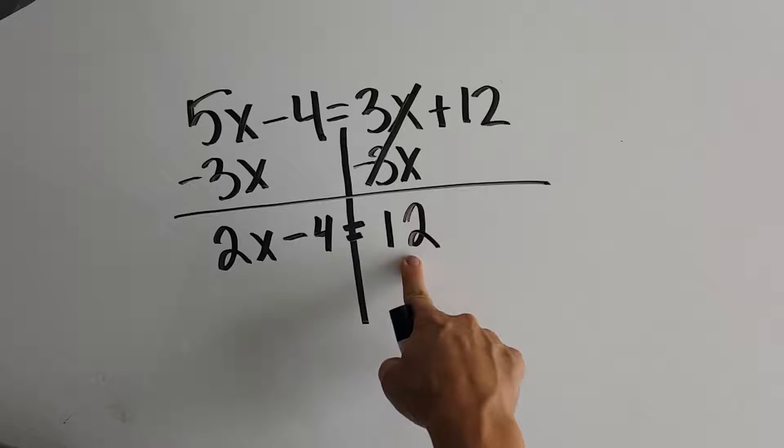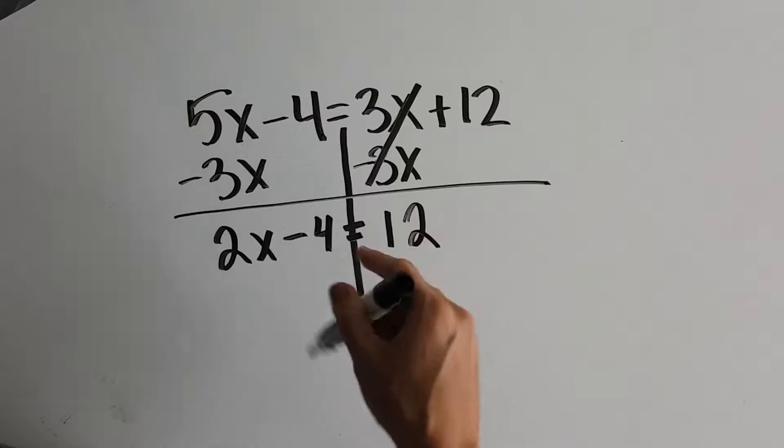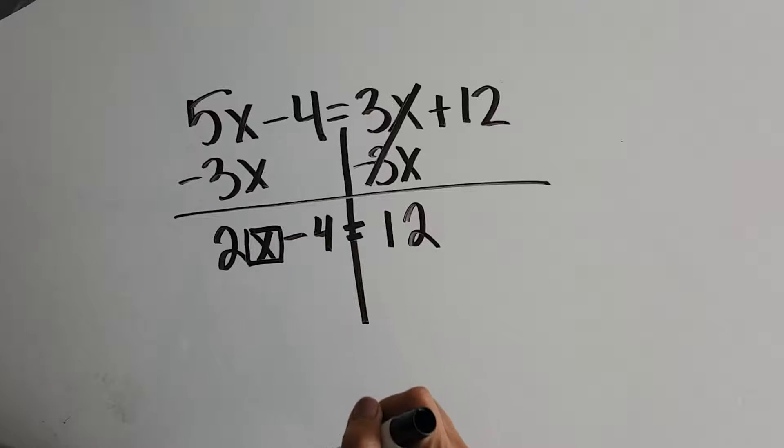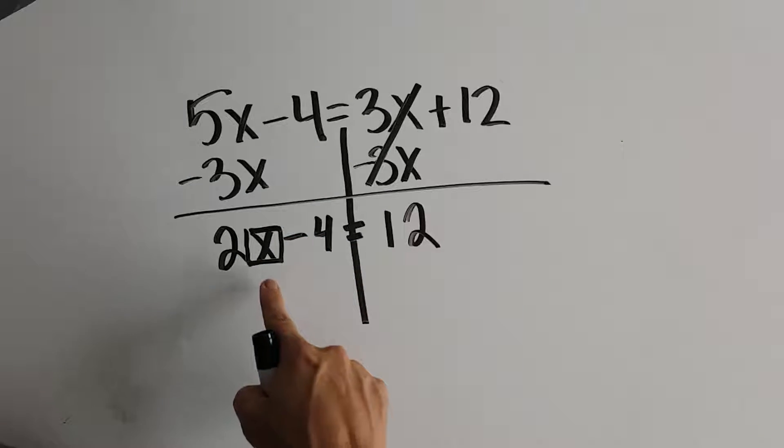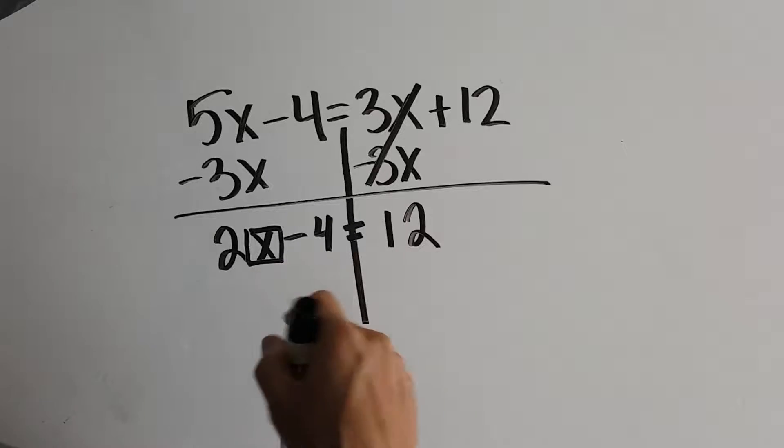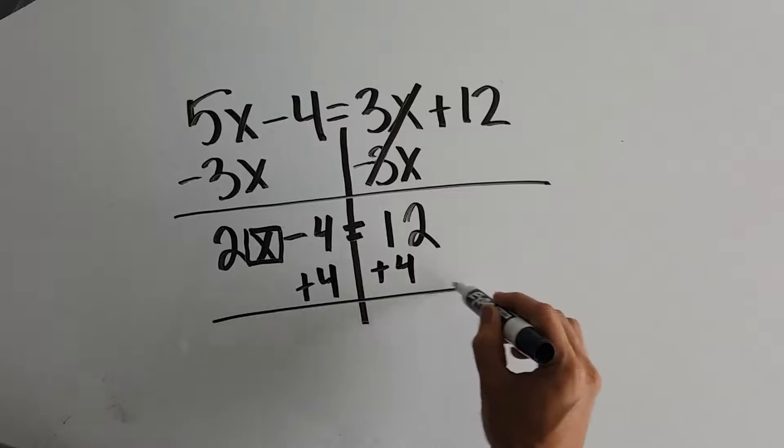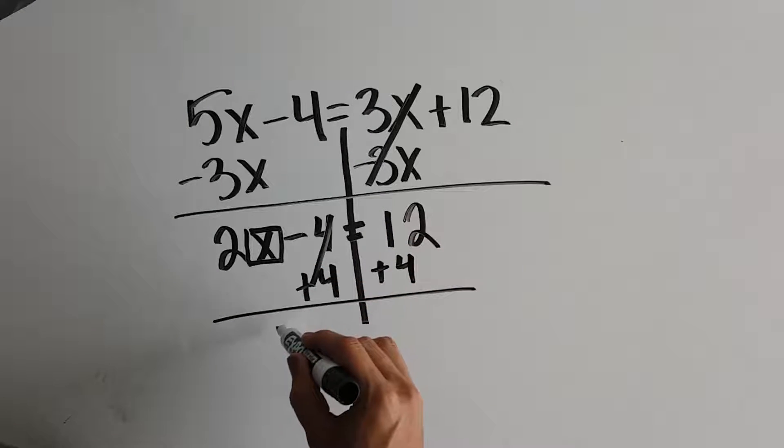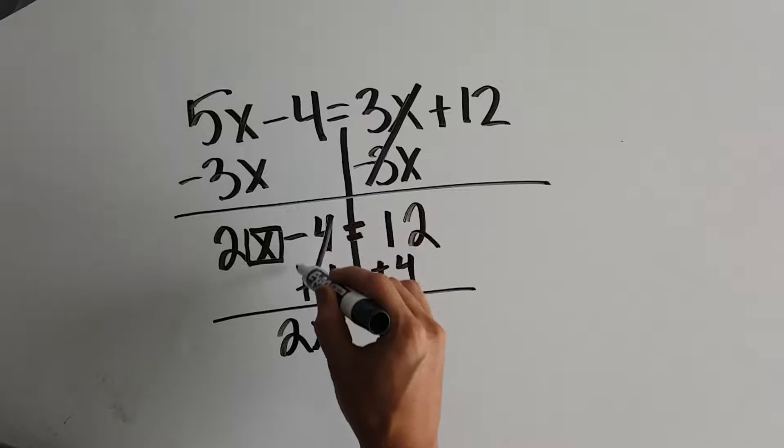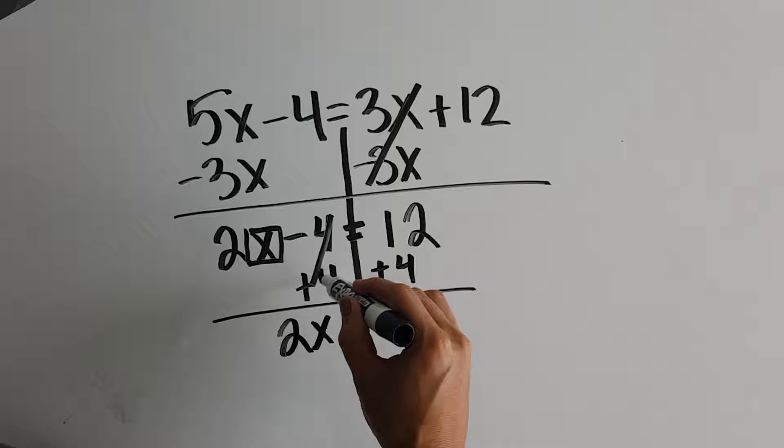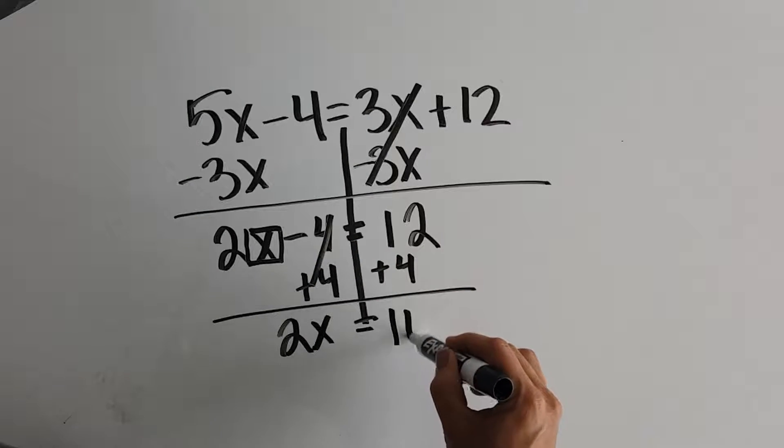Now we move on to step three, which says isolate the variable. So we want to essentially undo order of operations to get x by itself. So we add 4 to both sides. 2x is left over here. Negative 4 plus 4 is 0, so we cancel that out. 12 plus 4 is 16.